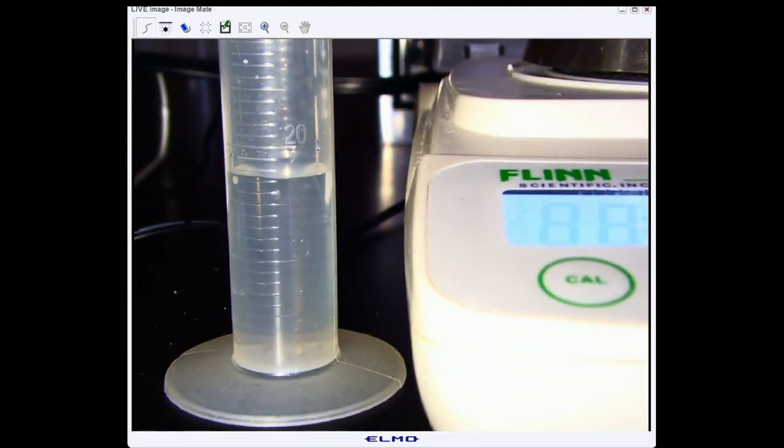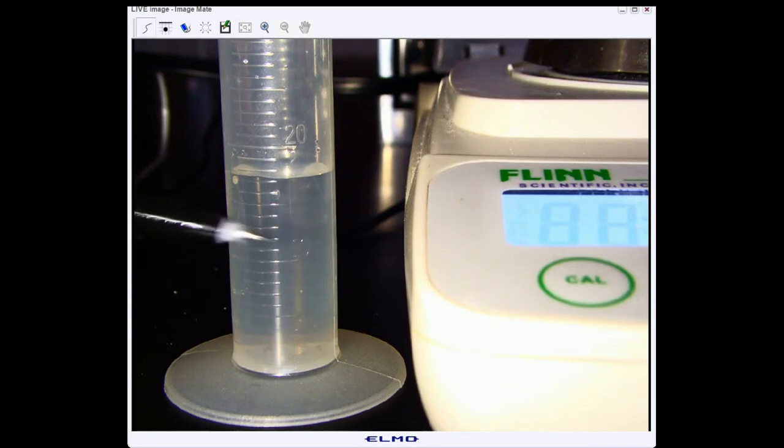Now we went a little over here. Each graduation on this cylinder is worth one milliliter because our major graduations are 10 and 20 and there's 10 lines in between. So here we've used approximately just over 17 milliliters of vinegar, which is okay, we're in the right ballpark for this lab.